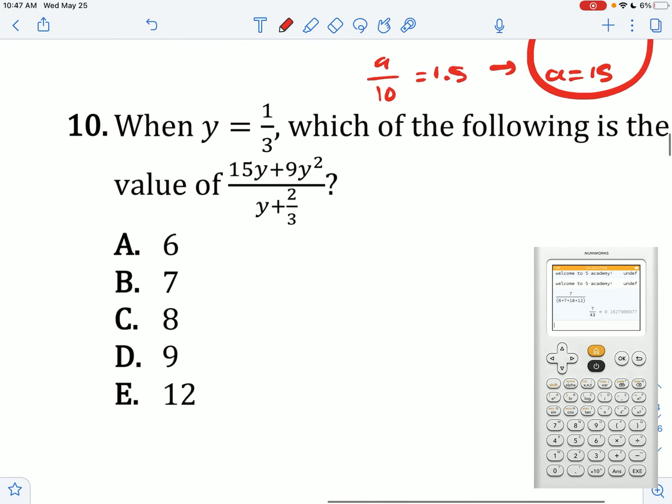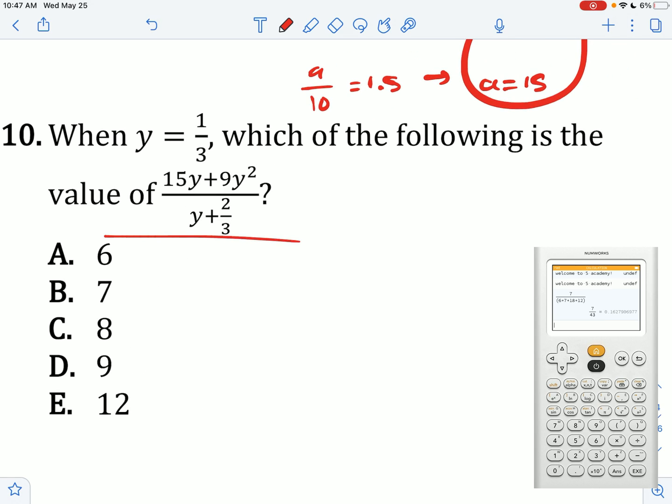When y equals 1 third, which of the following is the value of this? So 15 times 1 third is 5, plus 9 times 1 third squared is 9 times 1 over 9. That's 1. And then 1 third plus 2 over 3 is going to equal 1. So your answer is 6.